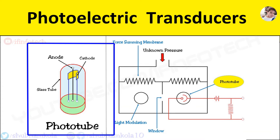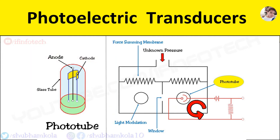The phototube consists of a large semicircular portion known as the cathode, and a thin wire in the middle known as the anode. Both anode and cathode are placed in a high vacuum glass envelope. The current in the circuit is directly proportional to the amount of light intensity falling on the cathode.